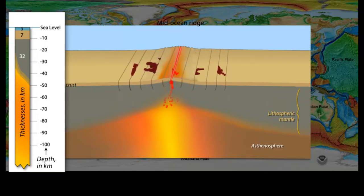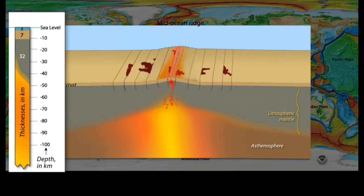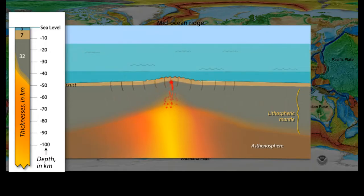As the plate slowly moves away from the ridge, it cools by conducting heat through the crust to the cold ocean water above. At the same time, the underlying asthenosphere cools and adds to the bottom of the lithospheric plate.